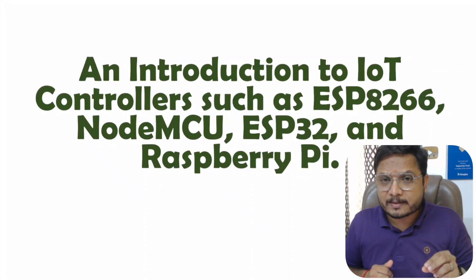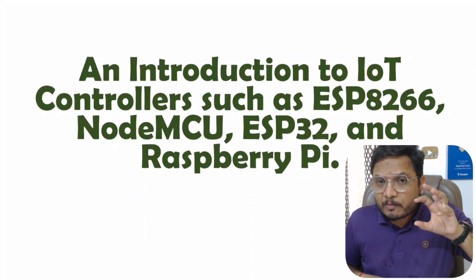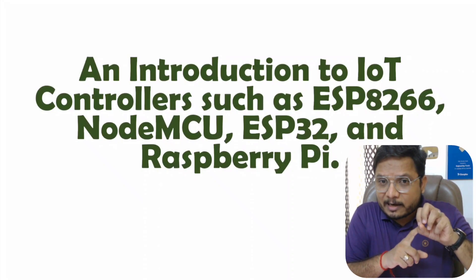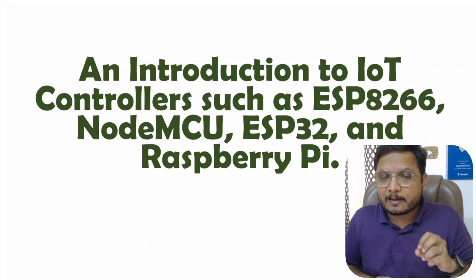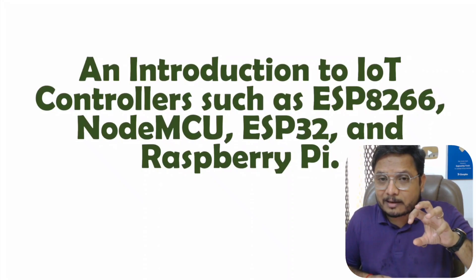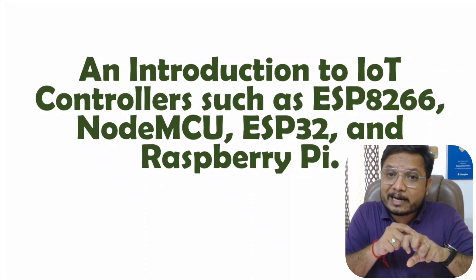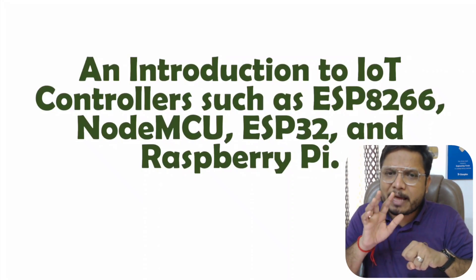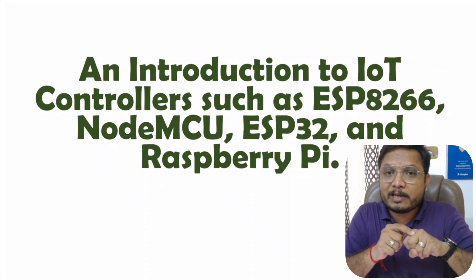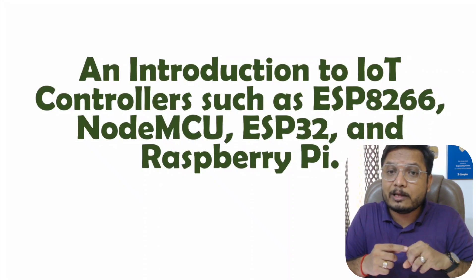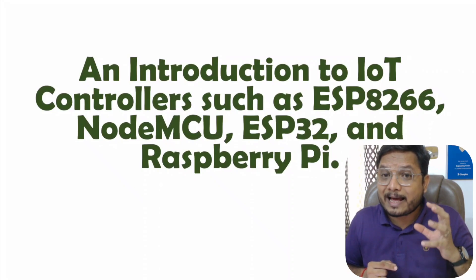First of all, you need to understand the basic difference between a normal microcontroller and an IoT controller. In a normal microcontroller, we interface input and output devices with the controller, and based on the program inside, input devices can communicate with output devices. While in an IoT controller, the controller is connected with input and output devices, data from input devices is uploaded on the internet, and an application gives commands to the controller to control actuators. So the basic difference is based on accessing the internet.